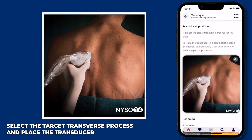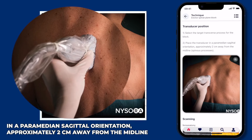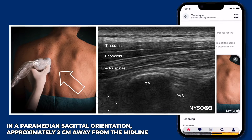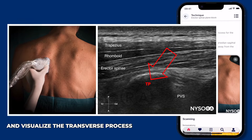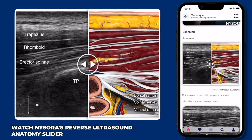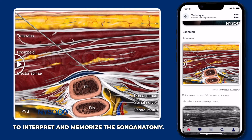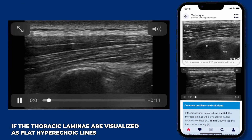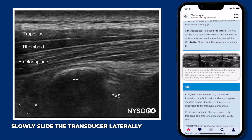One: select the target transverse process and place the transducer in a paramedian sagittal orientation, approximately 2 centimeters away from the midline, and visualize the transverse process. Watch NYSORA's reverse ultrasound anatomy slider to interpret and memorize the sonoanatomy. If the thoracic laminae are visualized as flat hyperechoic lines, slowly slide the transducer laterally.